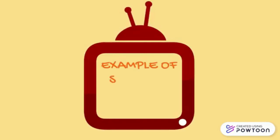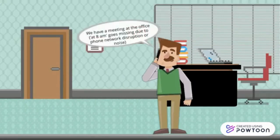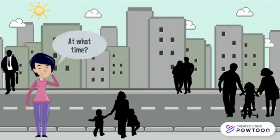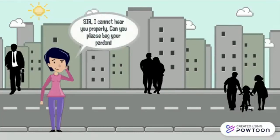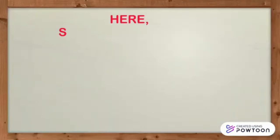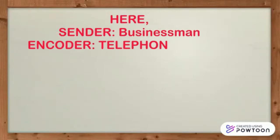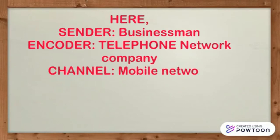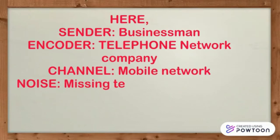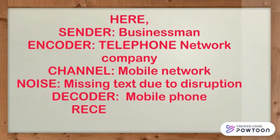Now let us watch an example of the Shannon and Weaver model of communication. 'Hello Ms. Ghosh, we will have a meeting at the office tomorrow at 8am.' 'Surely sir, I will be there but at what time?' 'At 8am.' 'Sir, your line is not clear. Please can I beg your pardon?' Here, the sender is the businessman and the encoder is the telephone network company. The channel is the mobile network. Noise is the missing text due to disruption — due to network glitches, the worker was unable to hear the full message. The decoder is the mobile phone of the worker and the receiver is the worker herself.